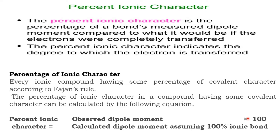The percentage ionic character is calculated using the equation: percentage ionic character = (observed dipole moment / calculated dipole moment) × 100. When we calculate the dipole moment, we assume it is a 100% ionic compound. We find the dipole moment and compute it considering it is a 100% ionic compound, then multiply by 100. This gives the percentage ionic character of any polar covalent molecule.